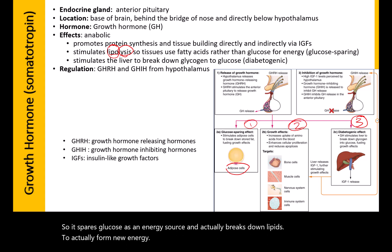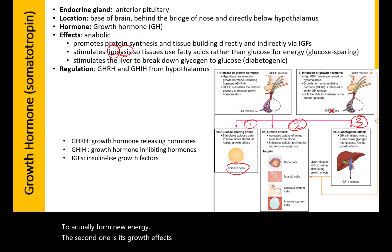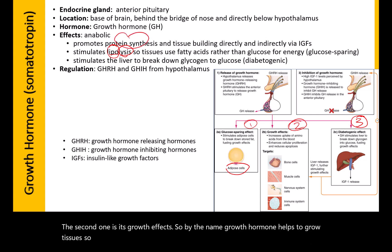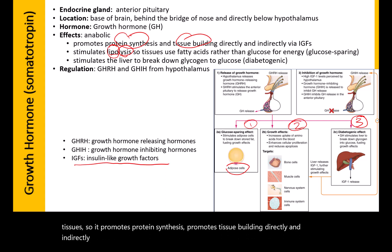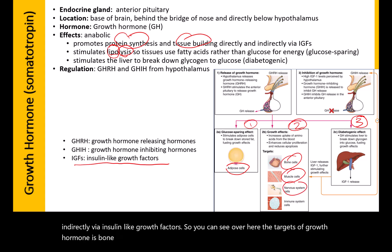The second effect is its growth effects. Growth hormone helps to grow tissues — it promotes protein synthesis and tissue building directly and indirectly via insulin-like growth factors. The targets of growth hormone are bone cells, muscle cells, the nervous system, and immune system cells.